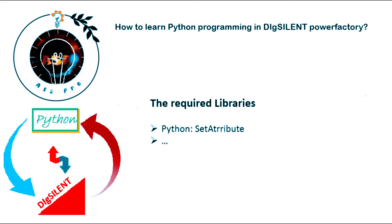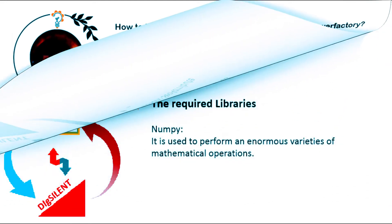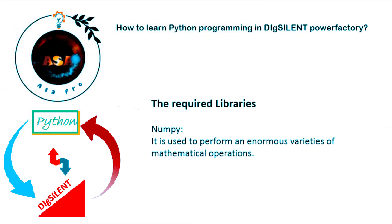Some other functions are allocated only for Python programs, like SetAttribute, which does not exist in DPL. The next library that we use the most is NumPy, which is used to perform a large variety of mathematical operations. It adds strong data structures to Python that grant efficient calculations with arrays and matrices, and provides an extensive library of high-level mathematical functions.